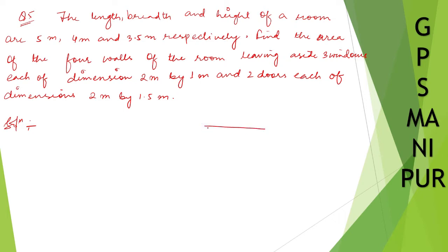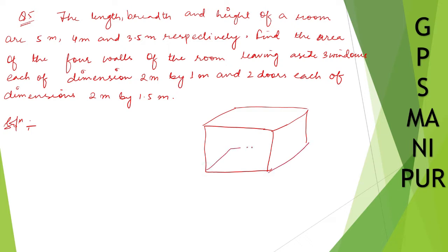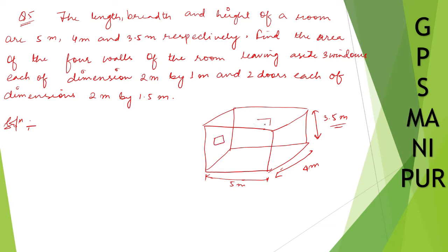Let us understand the question. The room is in the form of a cuboid. The length is 5 meters, the breadth is 4 meters, and the height is 3.5 meters. There are three windows — one here, another here, another here — and two doors. Leaving aside all the windows and doors, we need to find the area of the walls.